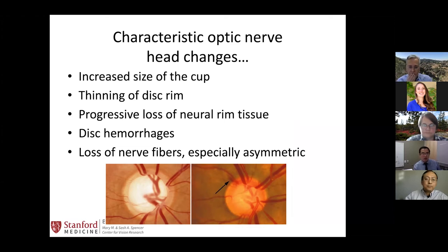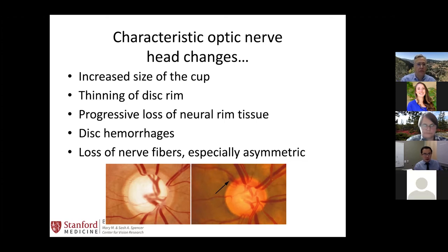Glaucoma is a progressive disease of the optic nerve with very characteristic optic nerve head changes. We typically see increased optic nerve cupping and thinning of the disc rim. Sometimes we see disc hemorrhages, as illustrated here with the arrow. There is frequently asymmetry in this disease, with one eye worse than the other — though they often catch up to each other.